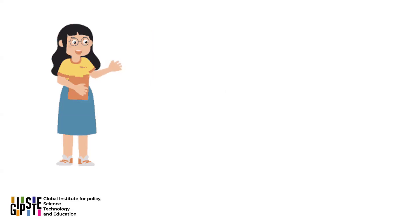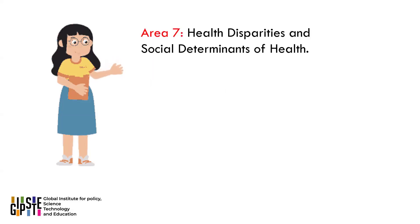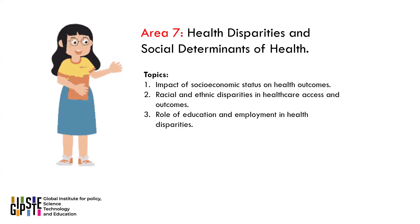Area 7: Health Disparities and Social Determinants of Health. Here are three topics for health disparities and social determinants of health: 1. Impact of socioeconomic status on health outcomes. 2. Racial and ethnic disparities in healthcare access and outcomes. 3. Role of education and employment in health disparities.